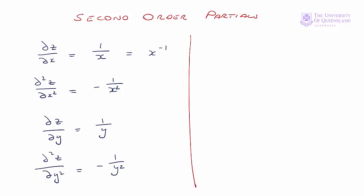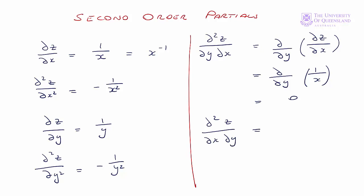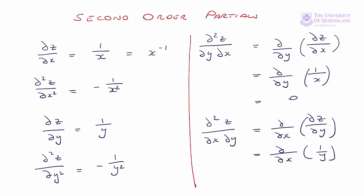Looking at the mixed partials, let's start with del squared z del y del x. We're taking the first partial with respect to x, del z del x, and then differentiating that function with respect to y. That's equal to del del y of 1 on x. Since we're treating x as a constant, that's going to equal 0. Similarly, del squared z del x del y is equal to the first partial with respect to y, del z del y, differentiated again with respect to x: del del x of 1 on y. And again, that's equal to 0.